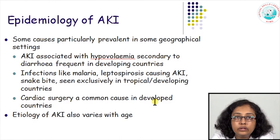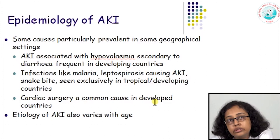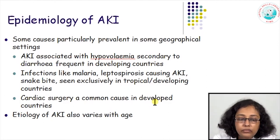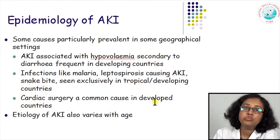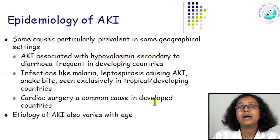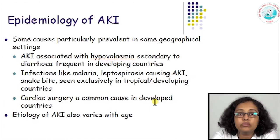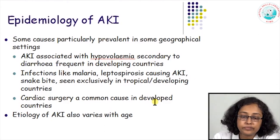Hospital-acquired kidney injury due to cardiac surgery is more common in developed countries and tertiary hospitals where these facilities are available. The etiology of acute kidney injury also varies with age — newborns may have a completely different pattern of causes, while etiology again varies in elderly patients.